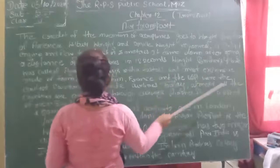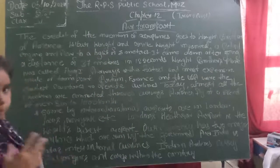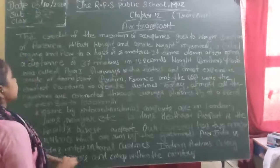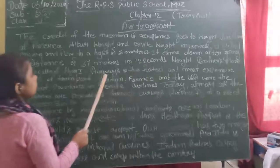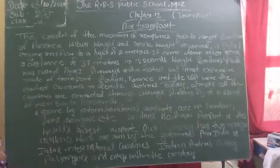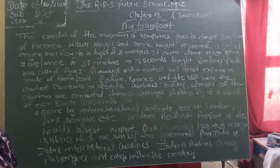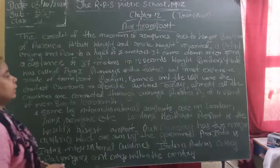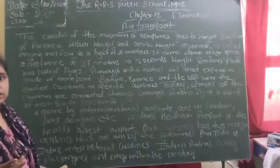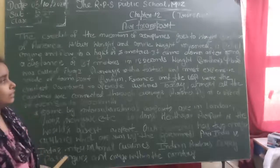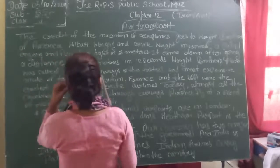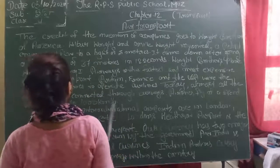The Wright Brothers built the Flyer One. Air transport is the fastest and most expensive mode of transport. Compared to roadways and waterways, air transport is faster but more costly.